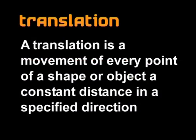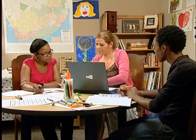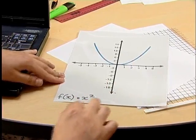Let us now join Karin as she explains this in more detail. Remember, a translation is defined as a movement of every point of a shape or object, a constant distance in the specified direction. Here we have the graph of the function f of x equals x squared.